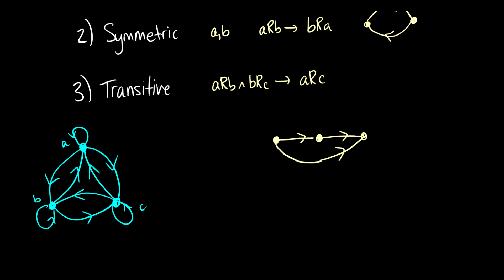Basically, what this says is that all of the elements are equal to each other. So a good equivalence relation is the equal sign. So a is equal to b is equal to c — one is equal to one is equal to one. This satisfies all three conditions. But we've already talked about that.